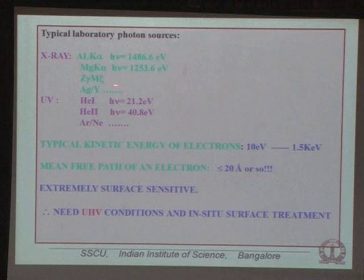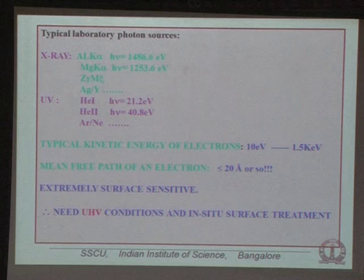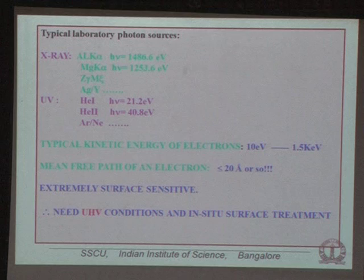For high resolution valence band work you use UV; for core levels you accept lower resolution and use X-rays. When photon energies are in this range, the kinetic energy of the emitted electrons is limited by the photon energy, ranging from about 10 eV to 1.5 keV.